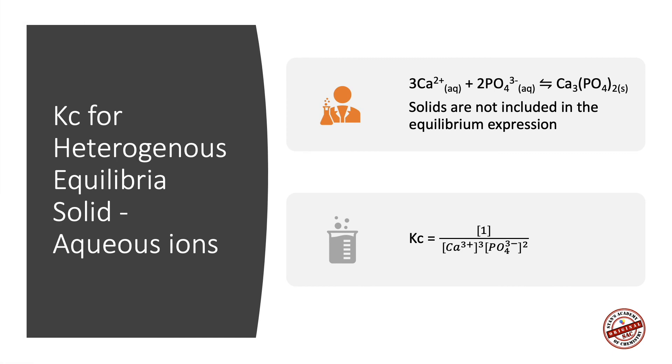Equilibrium constant involving a solid and aqueous ions equilibria. Here, this is the precipitation reaction, the net ionic equation for the precipitation of calcium phosphate. The product is a solid. The reactants are aqueous ions. Therefore, KC equals 1 over concentration of Ca³⁺ raised to 3 times phosphate raised to 2.